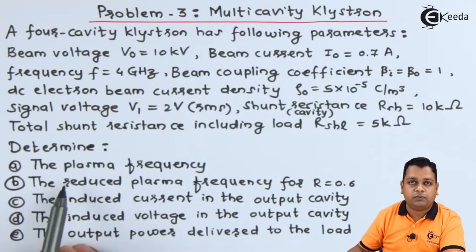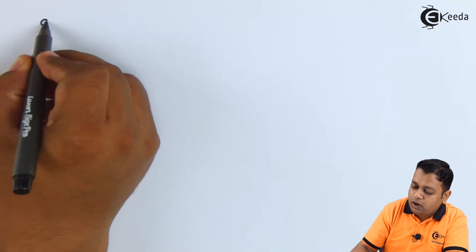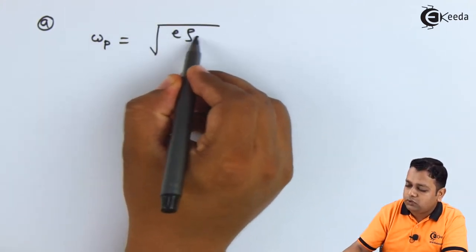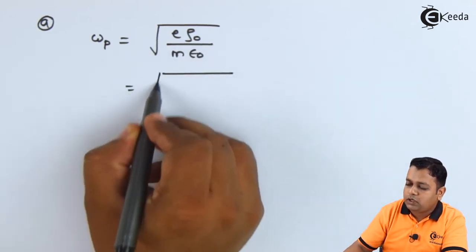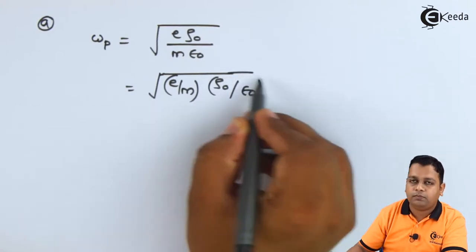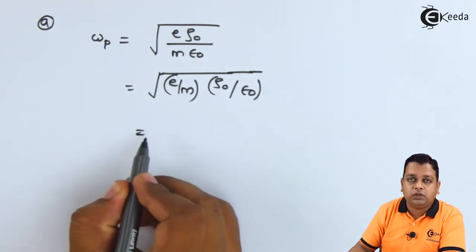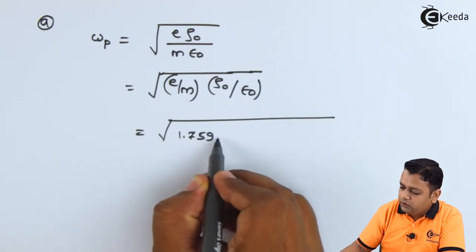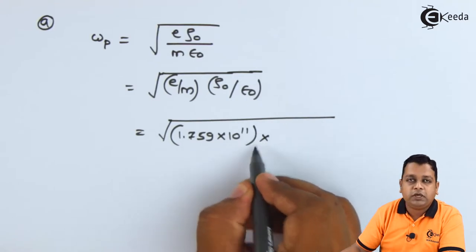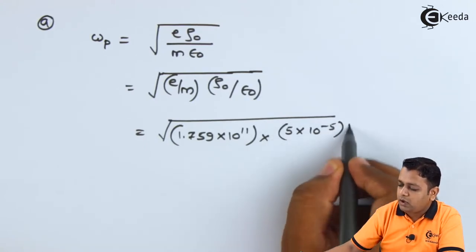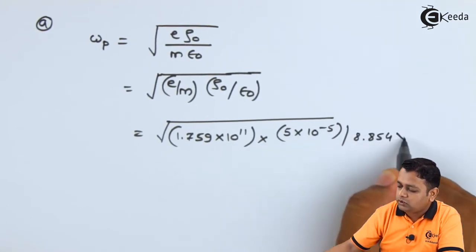First we shall determine the plasma frequency for the 4-cavity klystron. For part A, the plasma frequency ω_p is given by the square root of (e/m) × ρ_0 divided by ε_0. We take the ratio of e to m together, so we write (e/m) × ρ_0 divided by ε_0, the permittivity of free space. Substituting values: e/m ratio is 1.759×10¹¹, multiplied by ρ_0 which is 5×10⁻⁵, divided by ε_0 which is 8.854×10⁻¹².